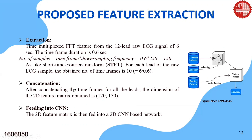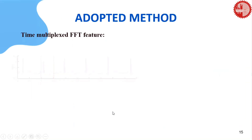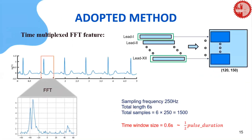This TMFFT feature extraction is similar to the Short-Time Fourier Transform (STFT). After obtaining the TMFFT feature from each ECG lead, we concatenated the features from all leads, which are converted into a 2D feature matrix and then fed into a 2D CNN-based architecture. This is our total classification module, showing the TMFFT feature extraction process, the FFT-transformed version of each time frame, and the concatenated 2D feature matrix obtained from each 12-lead ECG record.